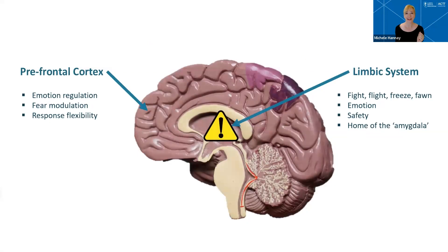Our limbic system is strongly at play when it comes to giving feedback. As a quick review, the limbic system is that primitive part of our brain where threats are perceived. Its goal is to keep us safe, and it is the center of emotion. It houses the amygdala — you may have heard of the term amygdala hijack — which is what happens when our limbic system perceives a significant threat and throws us into survival mode. Our prefrontal cortex is the center of higher-level thinking, where we regulate emotion and modulate those alarm bells that the limbic system raises.